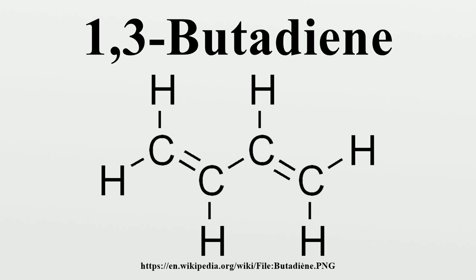Butadiene can also be produced by the catalytic dehydrogenation of normal butane. The first such post-war commercial plant, producing 65,000 tons per year of butadiene, began operations in 1957 in Houston, Texas. Prior to that, in the 1940s, the U.S. War Department constructed several plants in Borger, TX, Toledo, Ohio, and El Segundo, CA to produce synthetic rubber for the war effort as part of the United States' synthetic rubber program. Total capacity was 68 kmta. Today, butadiene from N-butane is commercially practiced using the Houdry Catadiene process, which was developed during World War II.